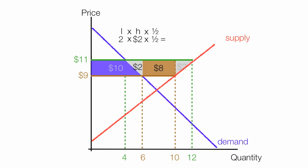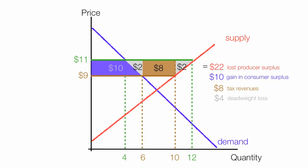And the area of that deadweight loss triangle too; they're the same. So if I add up all these areas, it equals $22, which is the same as the lost producer surplus. $10 is the gain in consumer surplus, $8 is the tax revenues, and $4 is the deadweight loss to society, which are these two triangles combined.